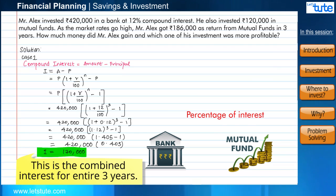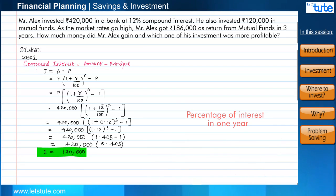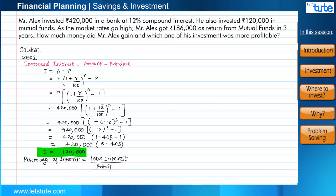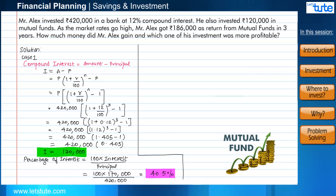So the percentage of interest will be equal to 100 multiplied by the interest divided by the principal amount. After inputting the values, the percentage of interest comes to 40.5%. Well, that's some great return. Let's see what happened in the case of mutual funds.